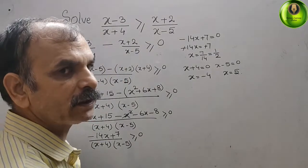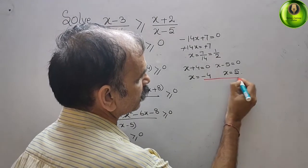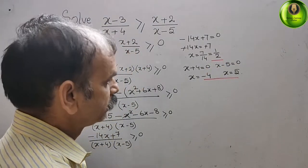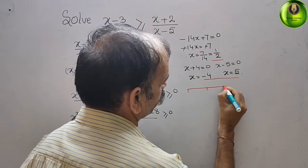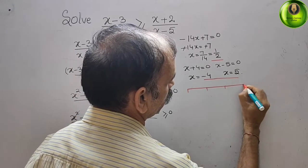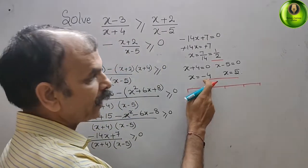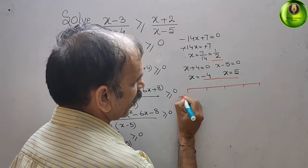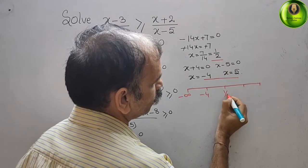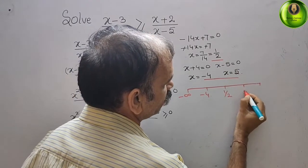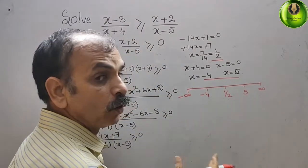Now we present all these x values on a number line. So this is: minus infinity, then minus 4, then 1 by 2, then 5, then infinity. You can see there are 4 sections.